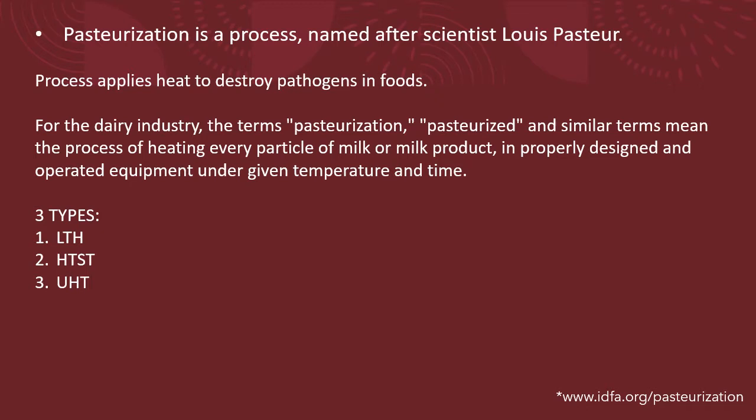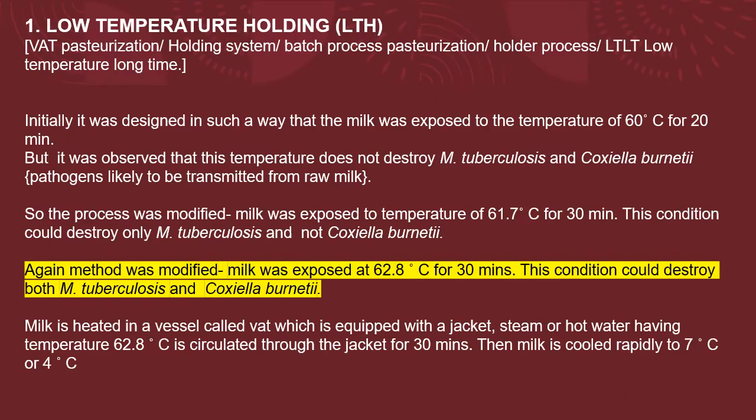Today we are going to discuss three types: LTH, HTST, and UHT. Let's start with the first — Low Temperature Holding, also known as VAT pasteurization, holding system batch process pasteurization, holder process, or LT-LT, that is low temperature long time process.